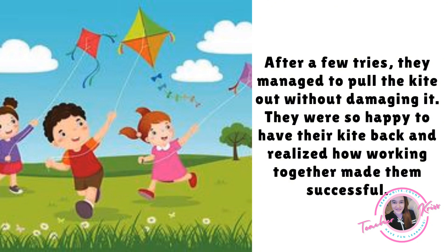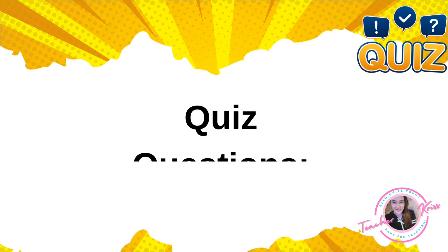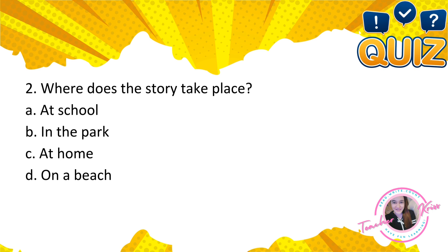Alright, from the story, let's try to answer a short quiz. You can get a pad paper to answer the following questions. Are you ready? Let's do it! Question 1: Who are the main characters in the story? A. Luis and Mia, B. Luis and his dad, C. Mia and her mom, D. Mia and her friend. The correct answer is letter A, Luis and Mia. Question 2: Where does the story take place? A. At school, B. In the park, C. At home, D. On a beach. The correct answer is letter B, in the park.